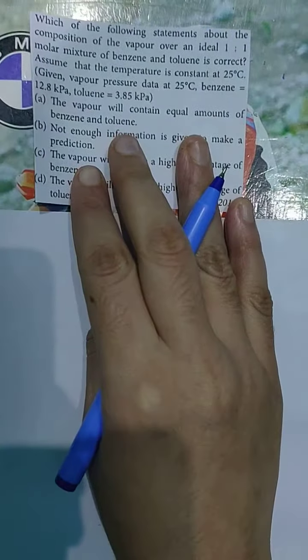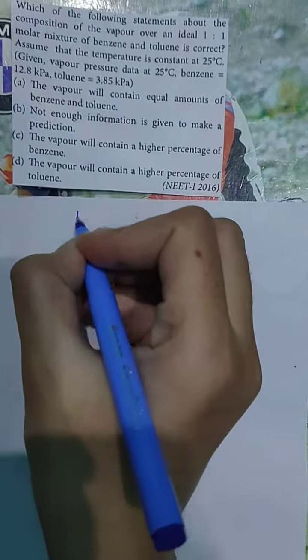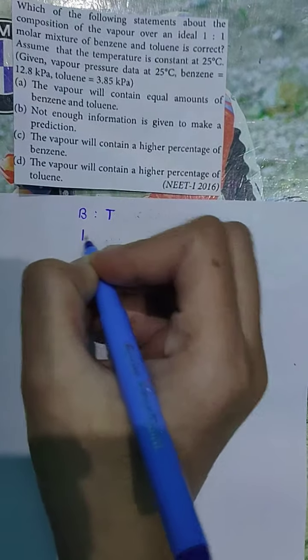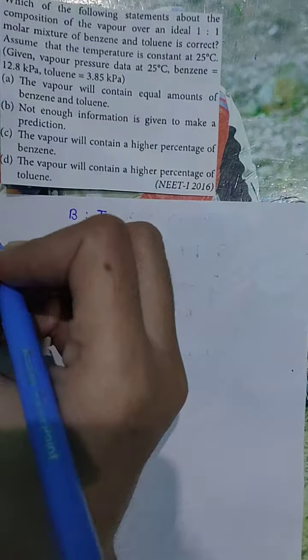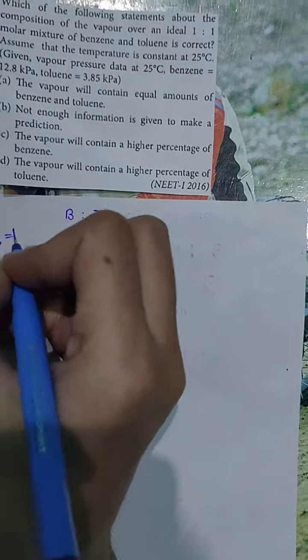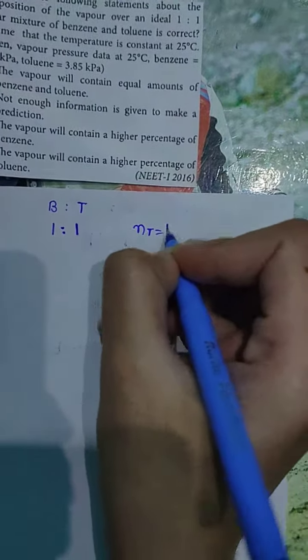I have a statement about composition of vapor over an ideal molar mixture of benzene and toluene. This molar mixture is 1 ratio 1, so number of moles of benzene is equal to 1 and number of moles of toluene is equal to 1.